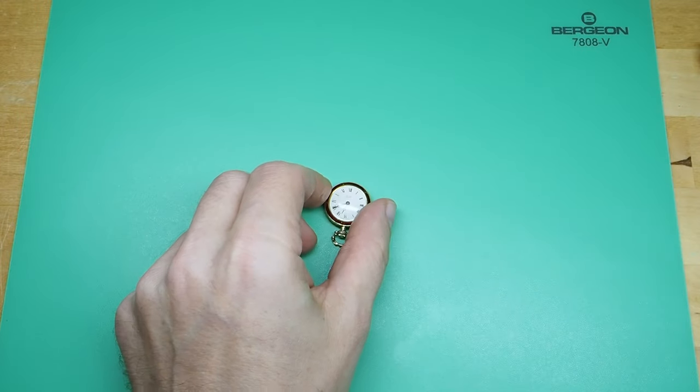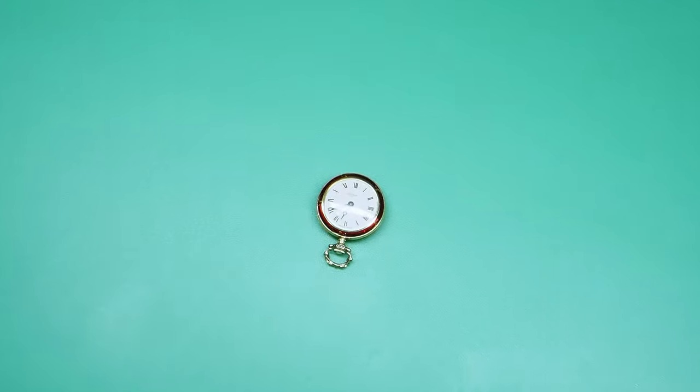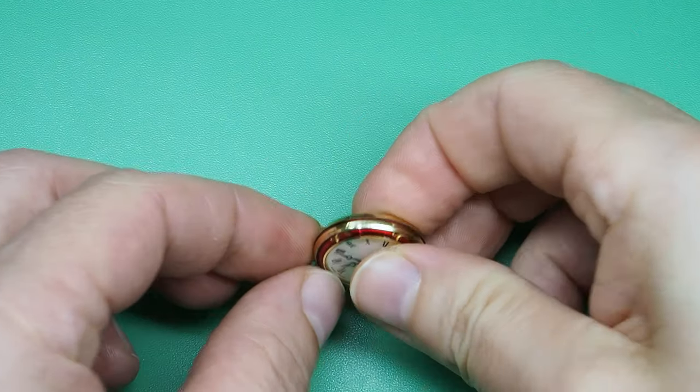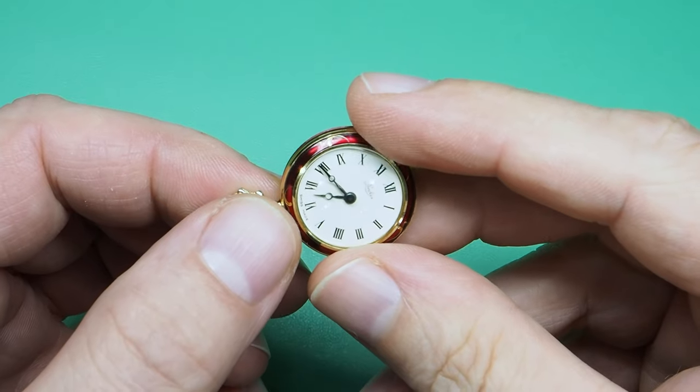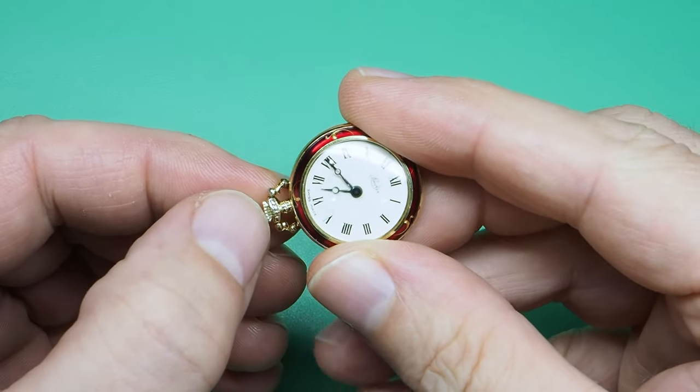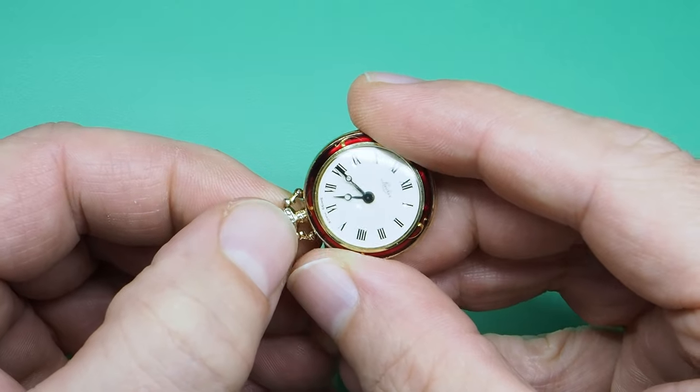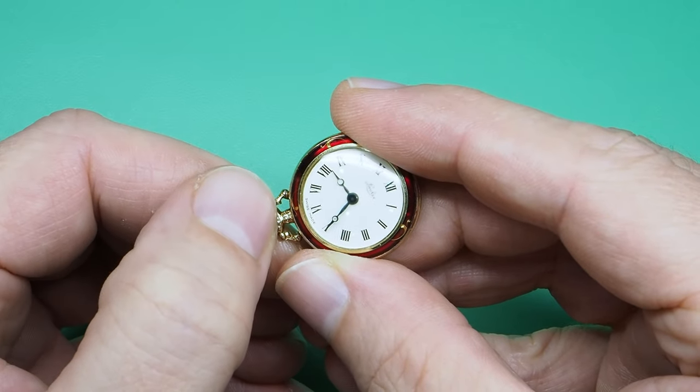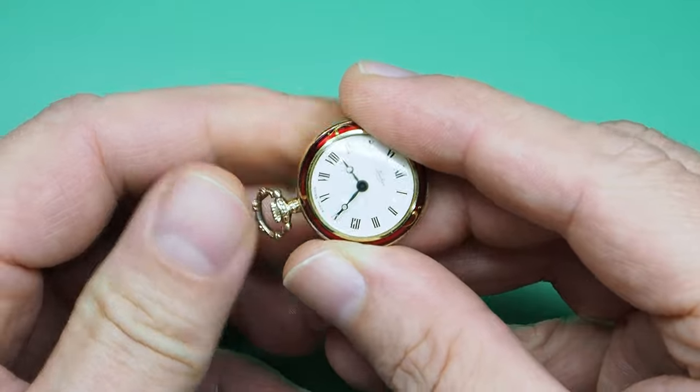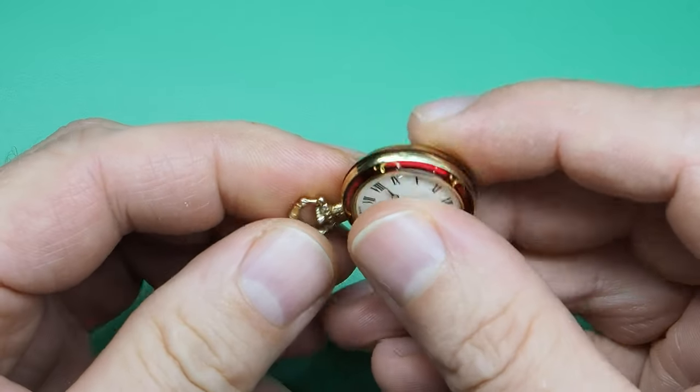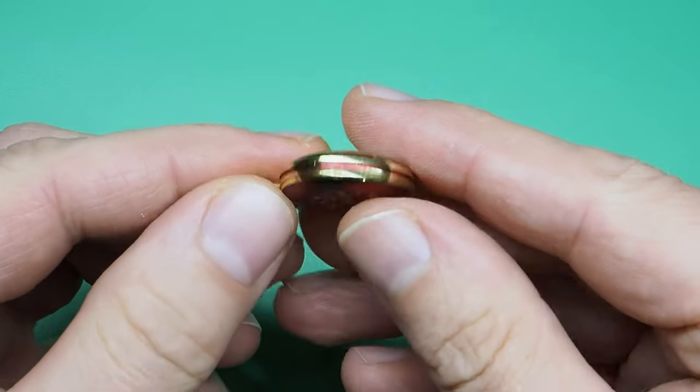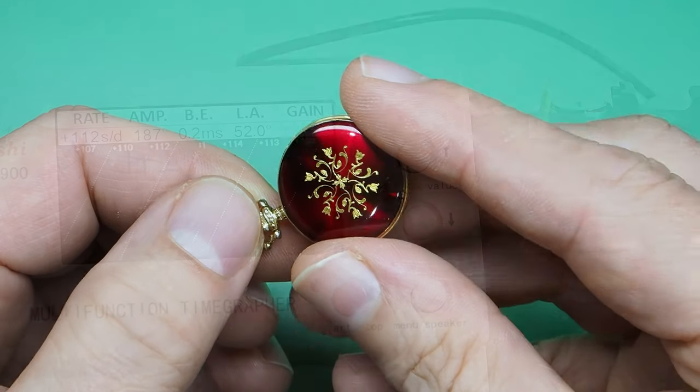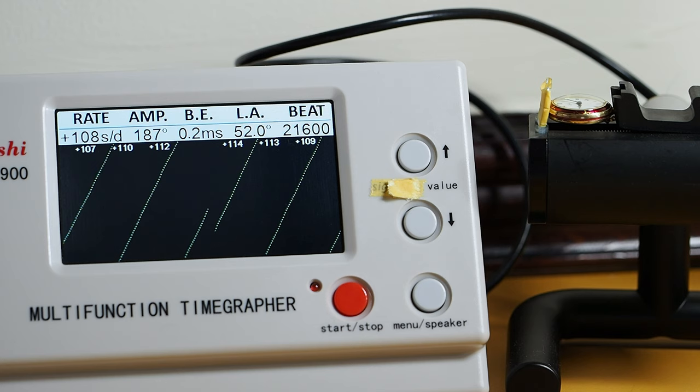The movement inside is FHF 69-21ST and the dimensions of the movement are 15.3 by 17.8 mm and the thickness is 3.6 mm. Yes, it's tiny. I don't know what the 69 stands for but the 21 stands for 21,600 beats per hour and the ST stands for standard. It's working but it has not been serviced for decades. When I put it on the time grapher it's gaining a couple of minutes a day despite demagnetizing it and the amplitude is low, around 190 degrees, so it would certainly benefit from a service.